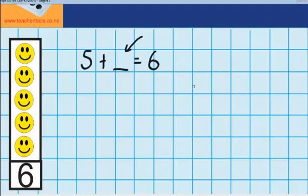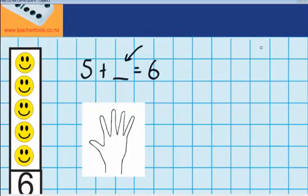So just like last time, let's use our fingers to represent this 5. And now I'm thinking to myself, how many more fingers do I need to outstretch so that I've got 6 fingers outstretched in total?